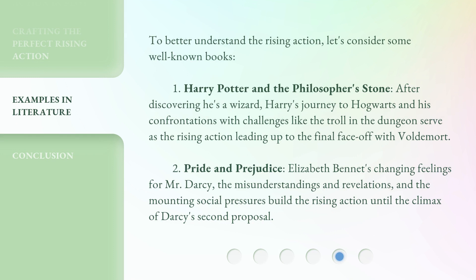To better understand the Rising Action, let's consider some well-known books. In Harry Potter and the Philosopher's Stone, after discovering he's a wizard, Harry's journey to Hogwarts and his confrontations with challenges like the troll in the dungeon serve as the Rising Action leading up to the final face-off with Voldemort. In Pride and Prejudice, Elizabeth Bennet's changing feelings for Mr. Darcy, the misunderstandings and revelations, and the mounting social pressures build the Rising Action until the climax of Darcy's second proposal.